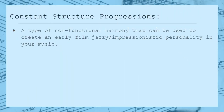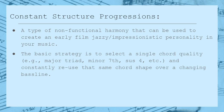Let's talk about constant structure progressions. Constant structure progressions are a type of non-functional harmony that can be used to create an early film music, kind of jazzy, impressionistic personality to your music. The basic idea is that you select a single chord quality, such as a major triad, minor 7th, sus 4, etc., and constantly reuse that same chord shape over a changing bass line. The focus is less on maintaining a specific tonal center and more on the combination of your chord quality and root motion.